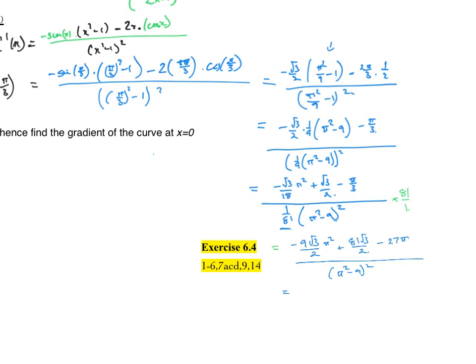We'll take a 9/2 at the front. So if I put a 9 at the front on a 2 on the bottom, I get -√3π² + 9√3. And that 27, well, if I take 9 out the front, it's a 3. But I'm going to bring a half out the front, that makes it 6π, over (π² - 9)².